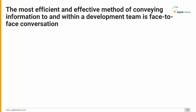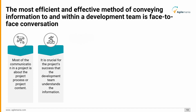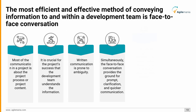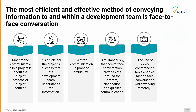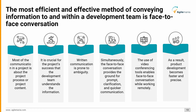The sixth principle in detail: the most efficient and effective method of conveying information to and within a development team is face-to-face conversation. Most communication in a project is about the project process or content, and it is crucial that the development team understands the information clearly. Written communication is prone to ambiguity, while face-to-face conversation enables prompt clarification and quicker communication. Video conferencing tools enable face-to-face conversation while working remotely, making product development faster and more precise.